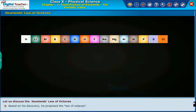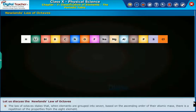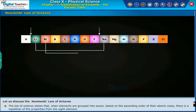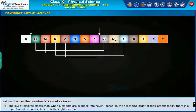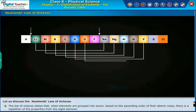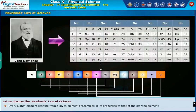He proposed the law of octaves. The law of octaves states that when elements are grouped into seven, based on the ascending order of atomic mass, there is a repetition of properties from the eighth element. Every eighth element, starting from a given element, resembles in its properties to that of the starting element.